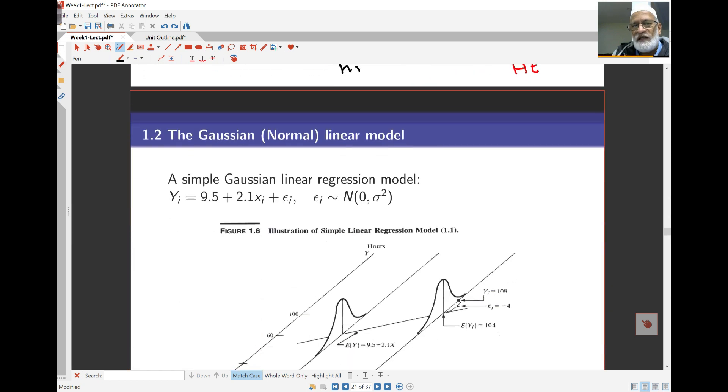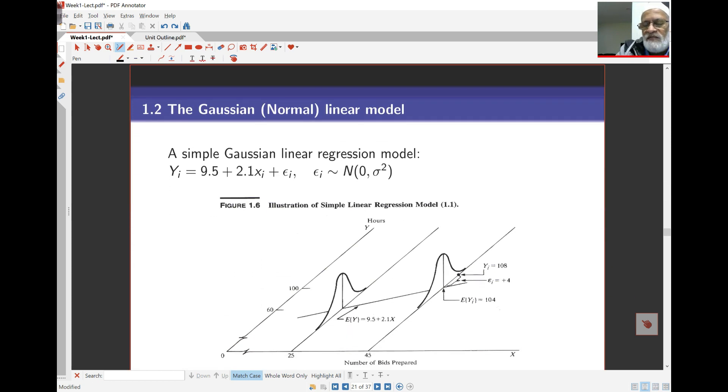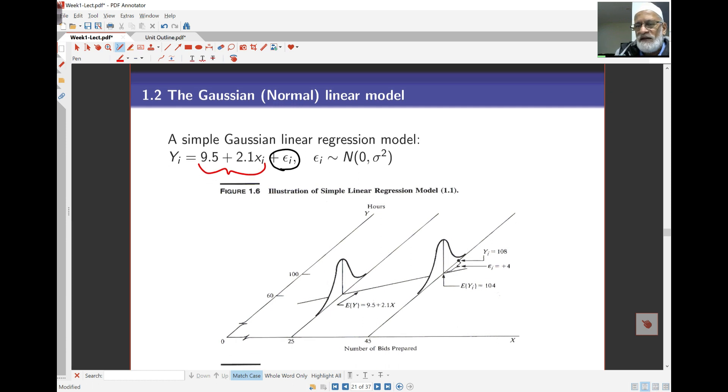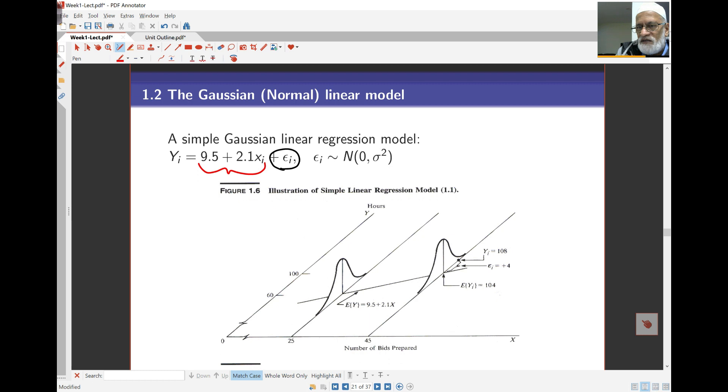Now, mathematically speaking, there is an example here. The simple Gaussian or normal linear regression model is something like this. My yi is for example 9.5 plus 2.1 times xi and there is some error involved here. The error, sometimes called residual or sometimes called random variation, I am assuming this is normal. The mean is zero because the mean actually has been captured by this model, the equation. And the variance is sigma squared. This sigma squared is constant. I do not have this depending on i at all or anything else. I am assuming the variance is constant.